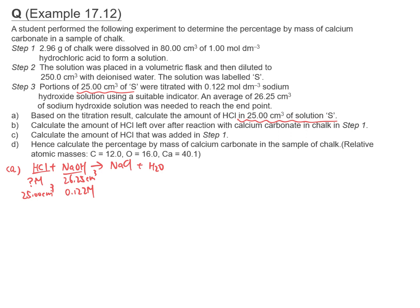The mole ratio of HCl to NaOH is 1 to 1. So the number of moles of HCl equals the number of moles of NaOH. That will be 0.122 times 26.25 divided by 1000, which equals 3.20 × 10⁻³ moles.